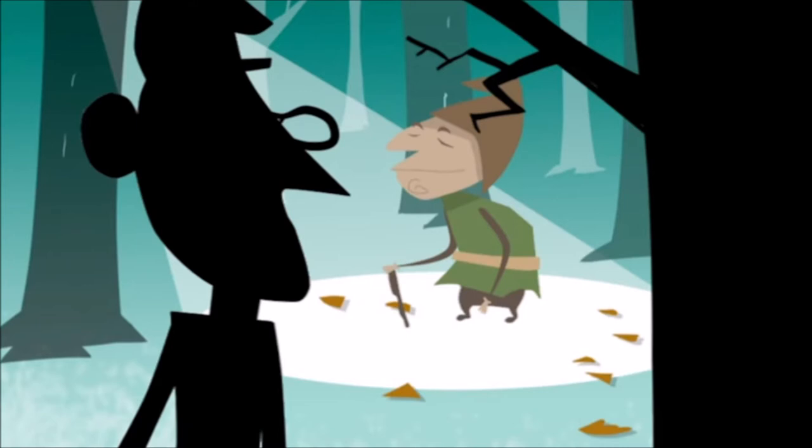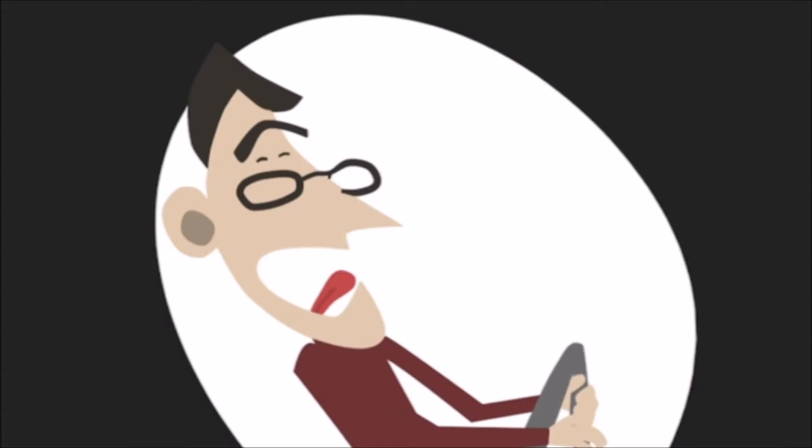But when he began to hew down a tree, it was not long before he made a false stroke, and the axe cut him in the arm. So he had to go home and have it bound up, and this was the little grey man's doing.